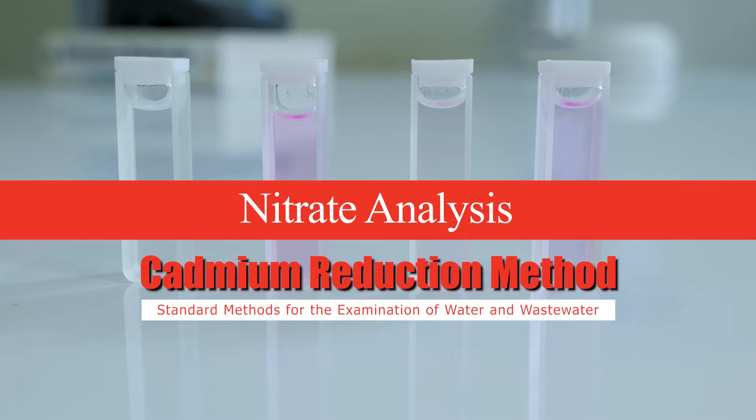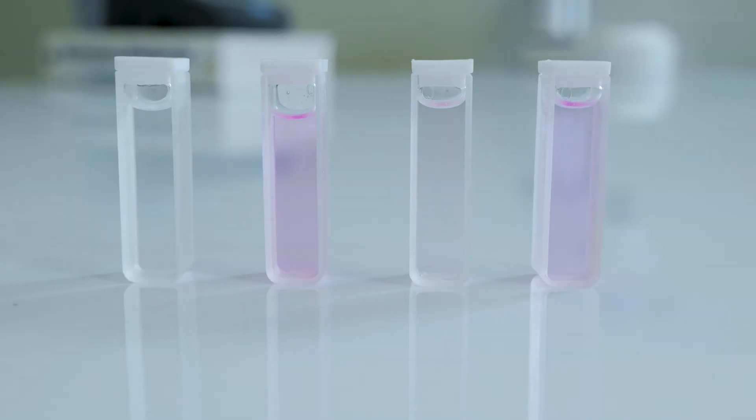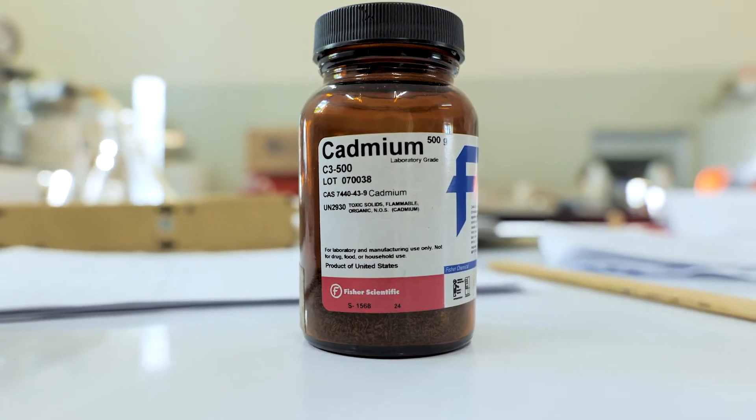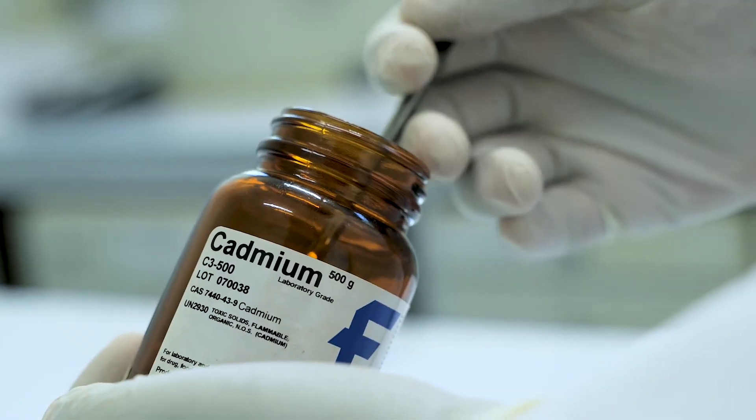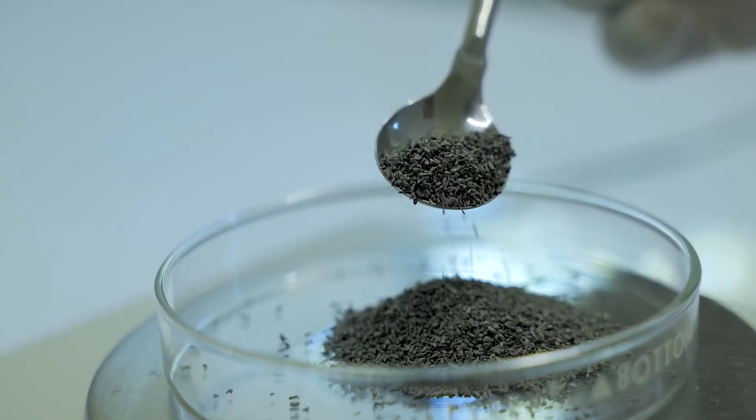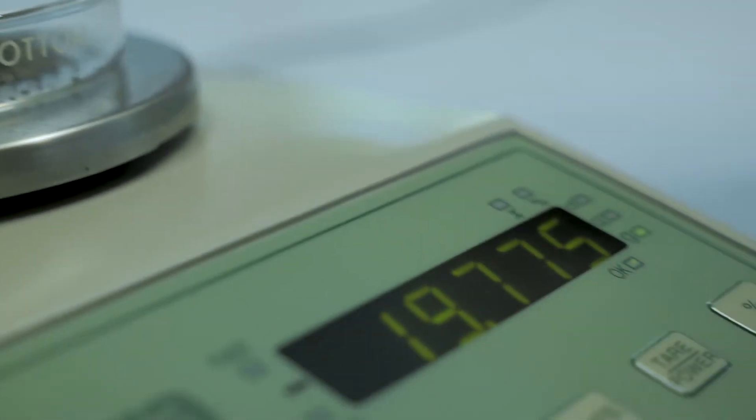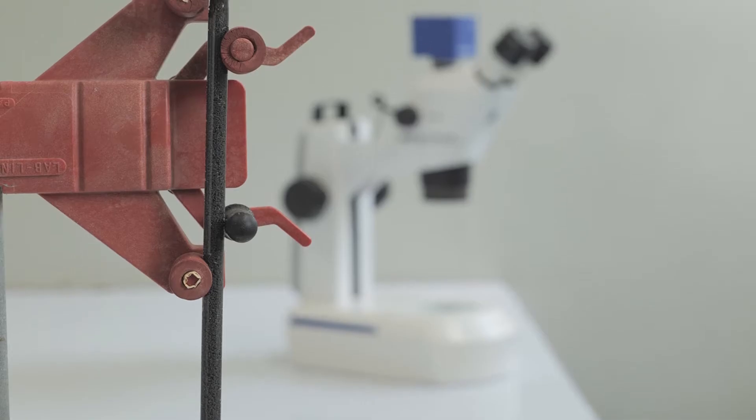Nitrate is reduced almost quantitatively to nitrite in the presence of cadmium. This method uses commercially available cadmium granules treated with copper sulfate and packed in a glass column.